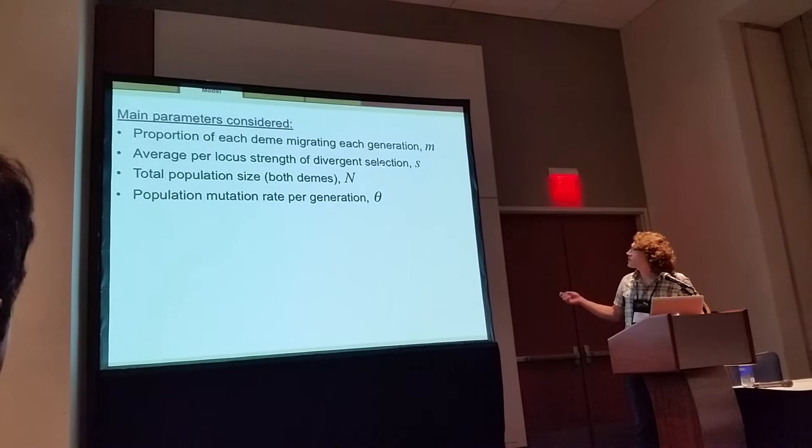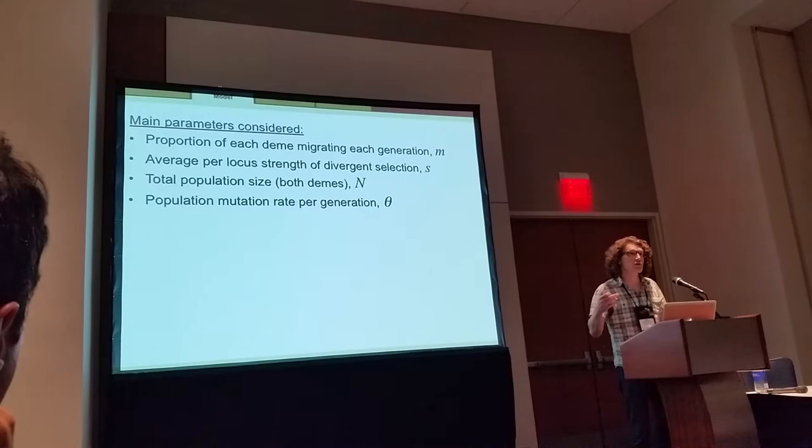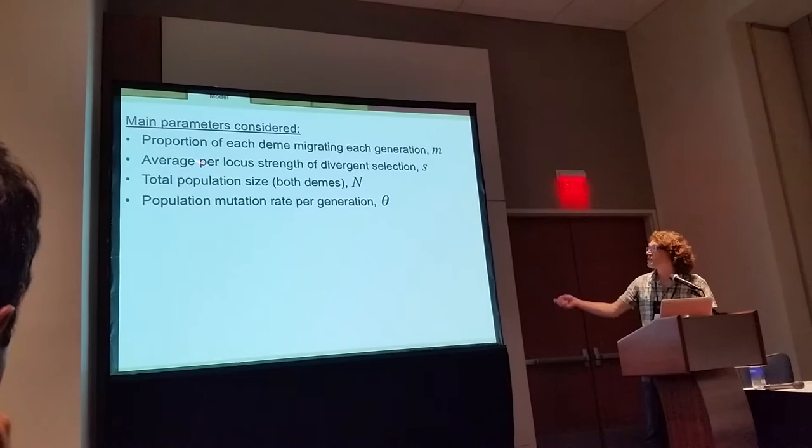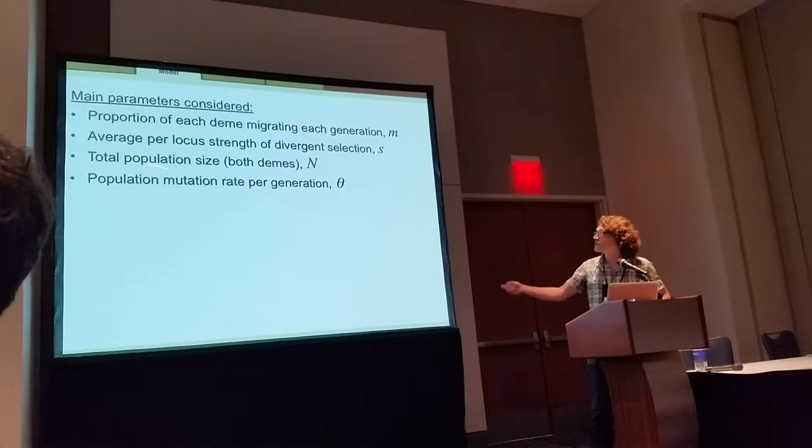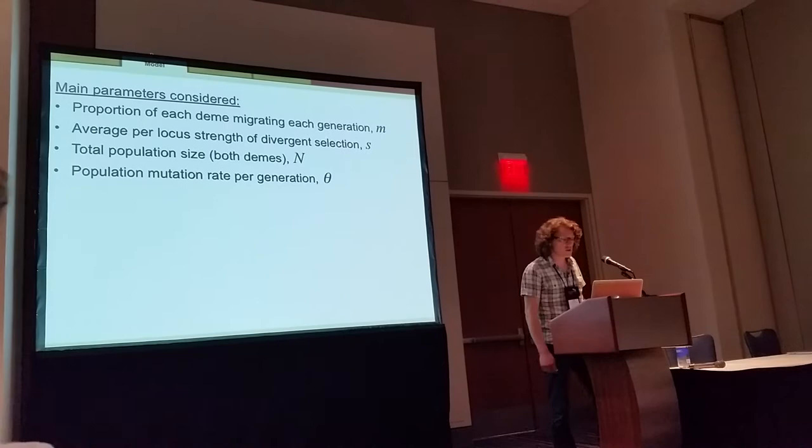There are a number of parameters in the model. The main ones you'll see in the results include: the proportion of each DEM migrating each generation (also the per-individual probability of migration per generation), the average per-locus strength of divergent selection — which does not apply to neutral loci — the total population size of both DEMs together, and the population mutation rate per generation.